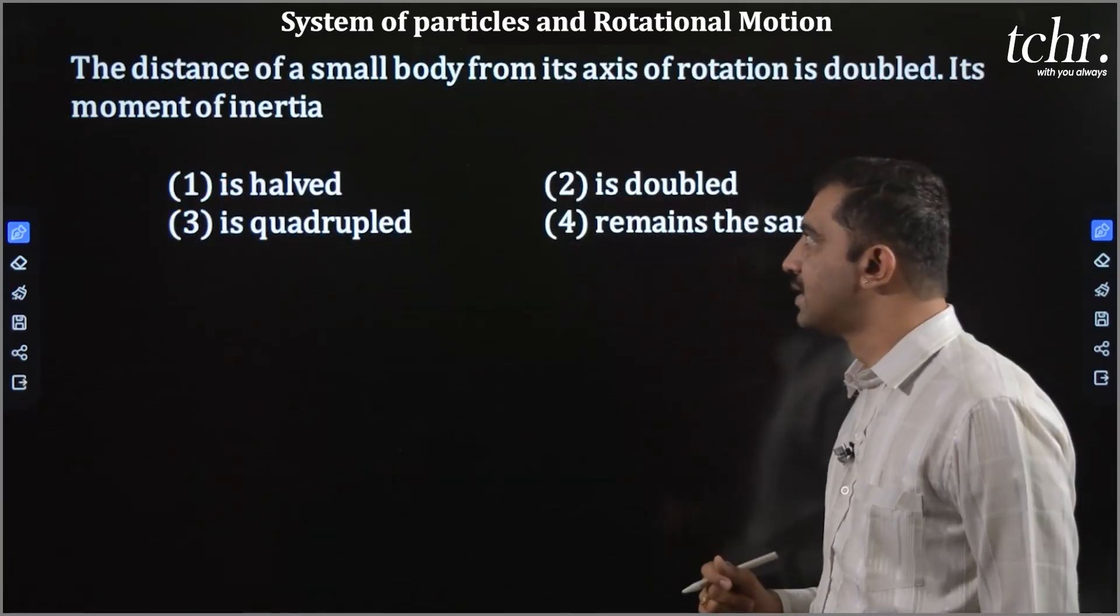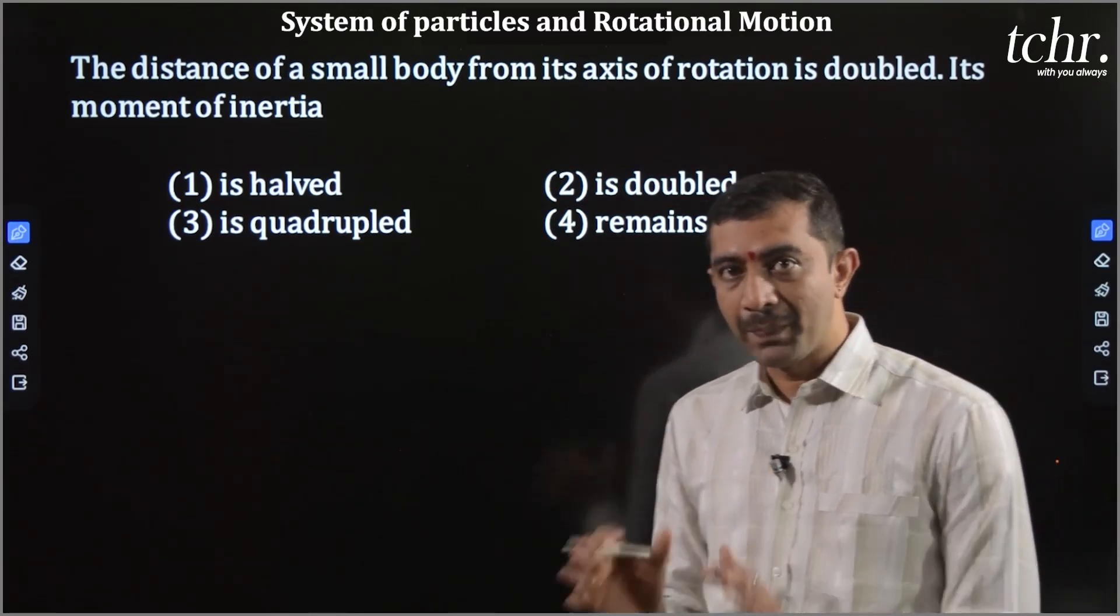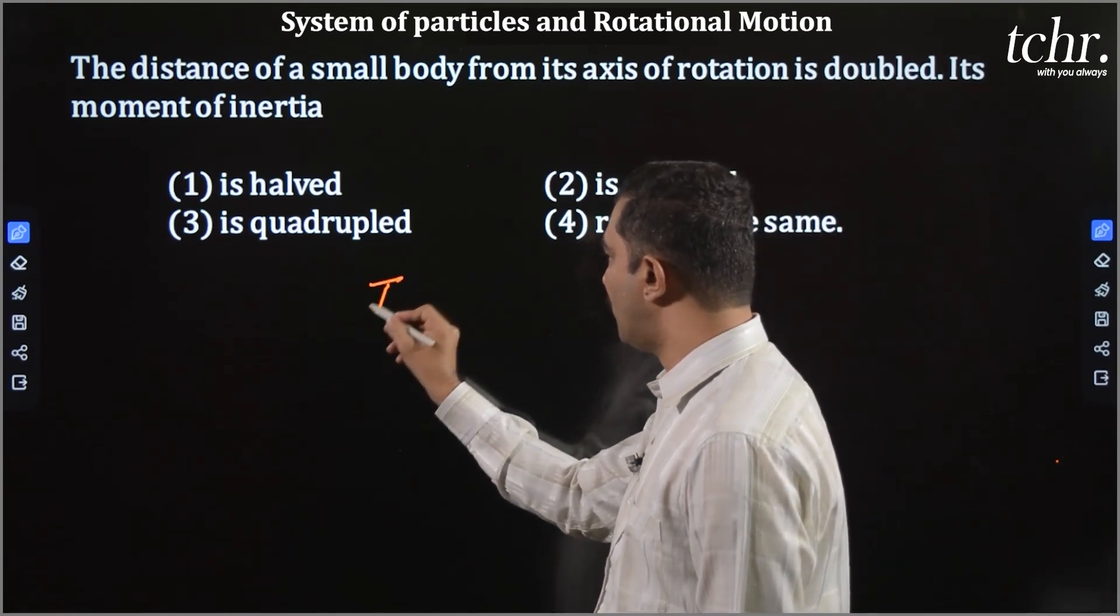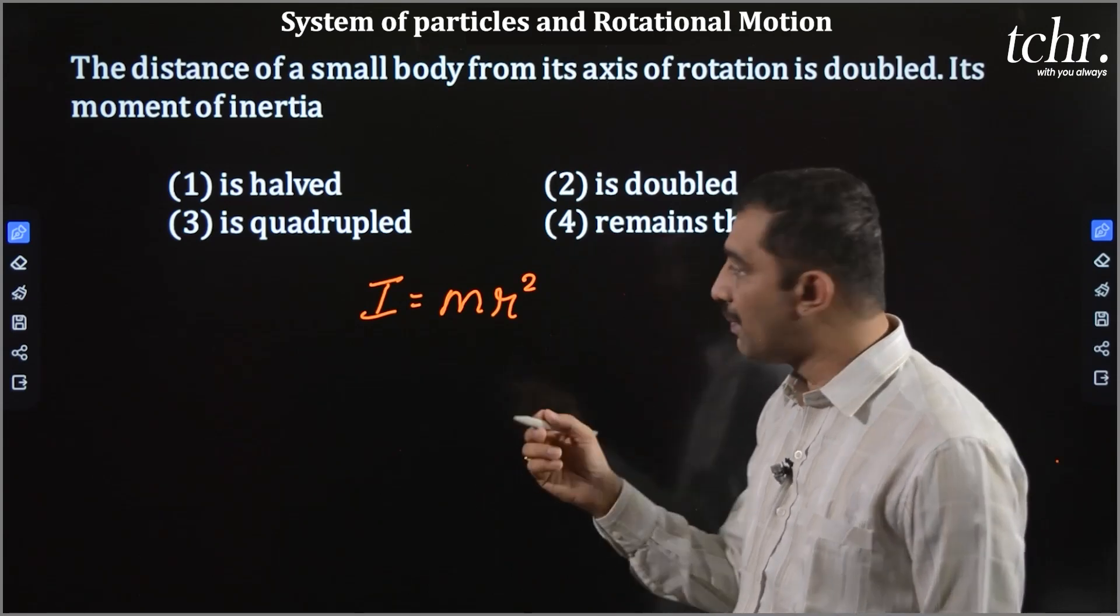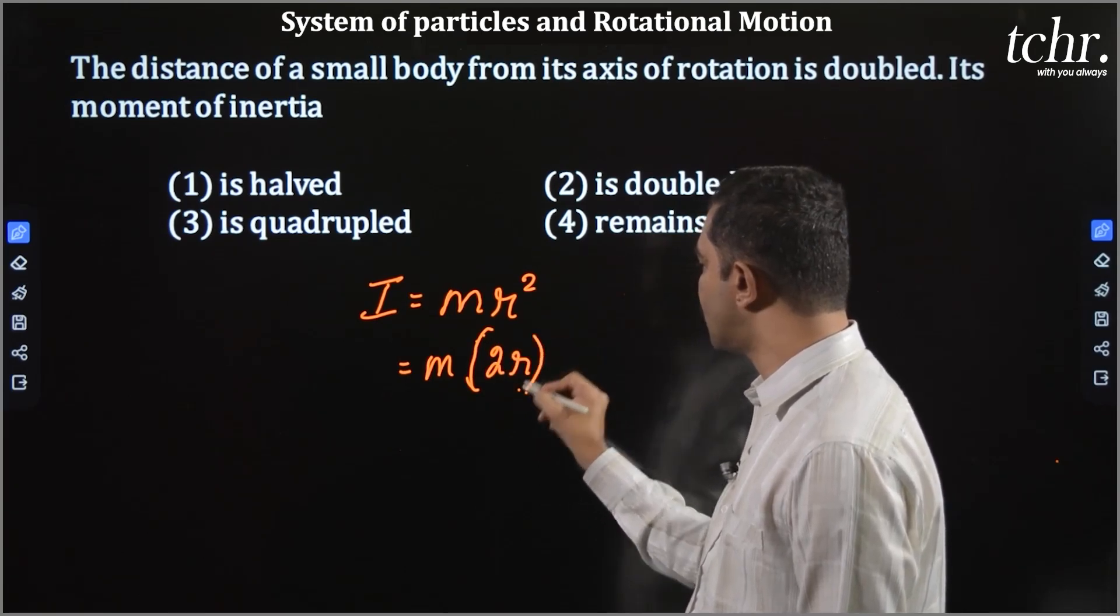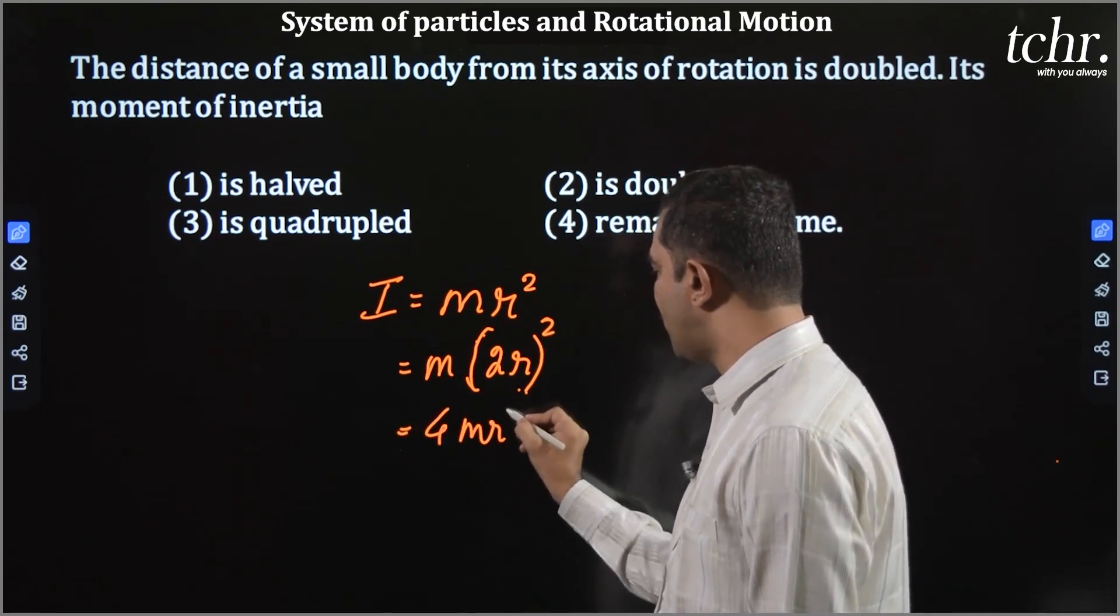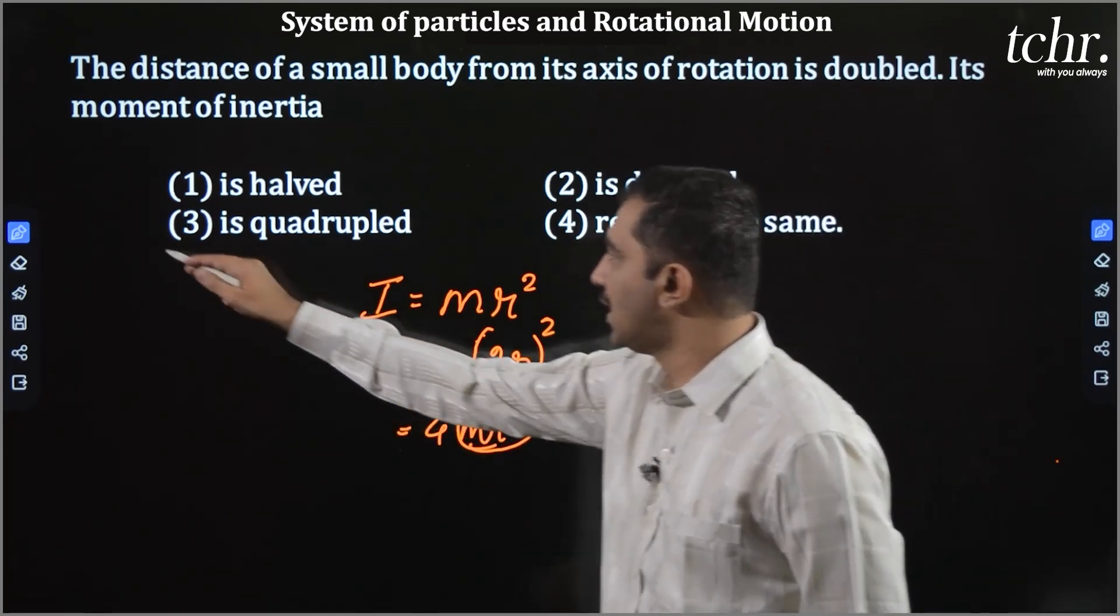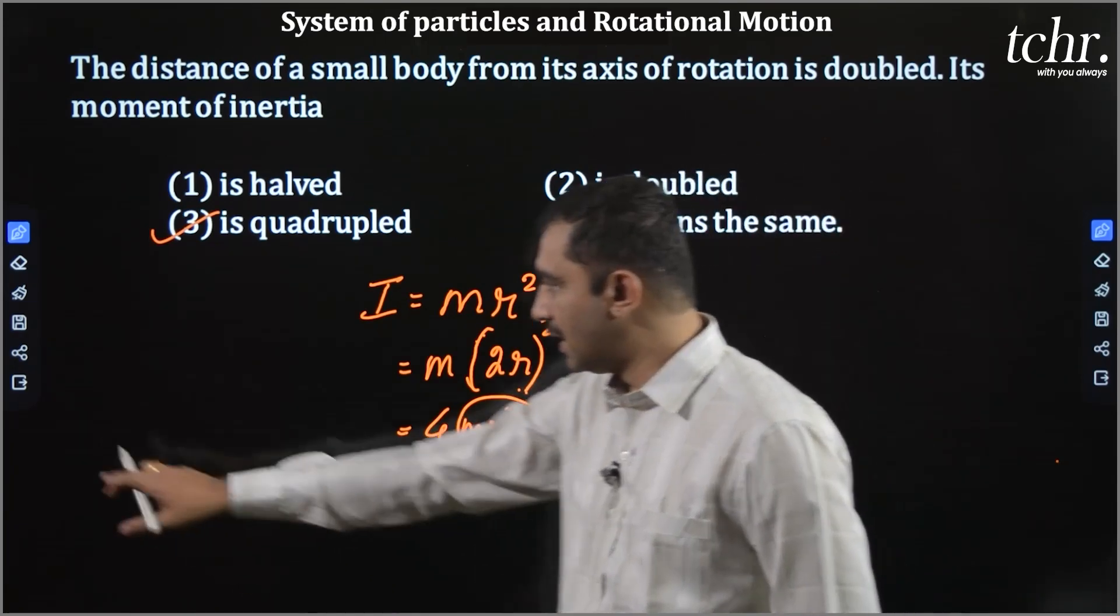Next one. Look into this. The distance of a small body from the axis of rotation is doubled. What happens to its moment of inertia? Now, moment of inertia is given by M into R square. Distance doubled. M is the same. R is going to 2R whole square. 2R whole square, which will be equal to 4 into MR square. MR square is initial moment of inertia. So, moment of inertia gets quadrupled. It increases 4 times.